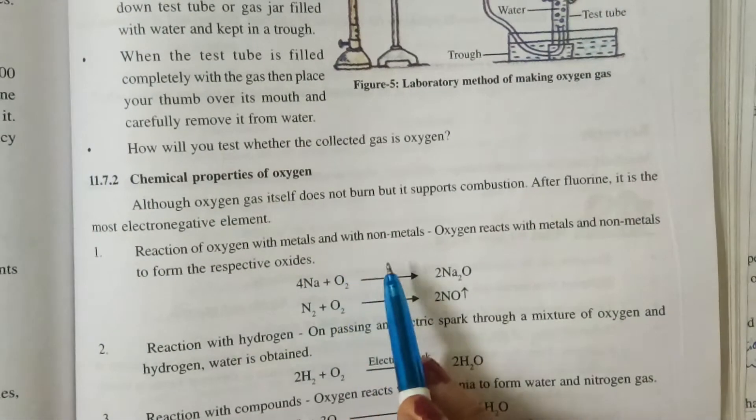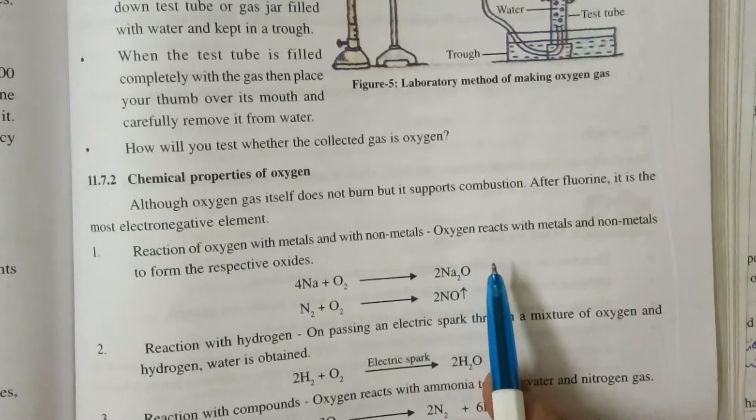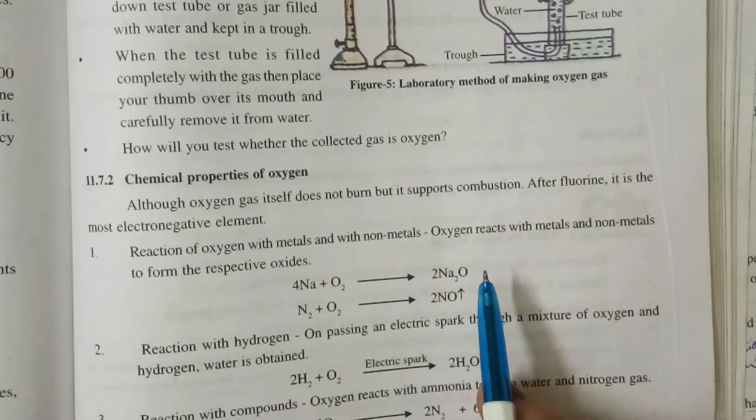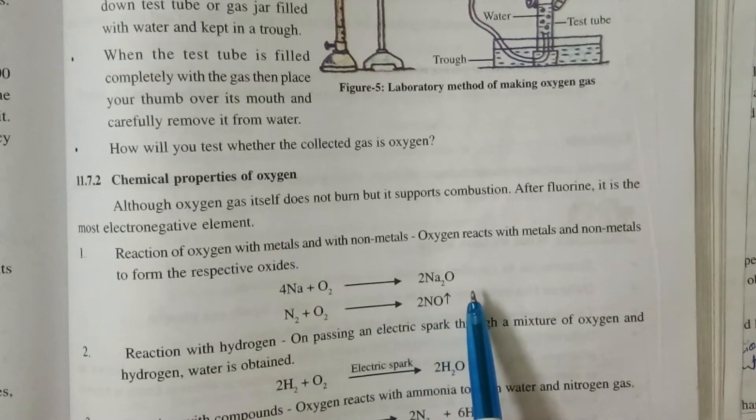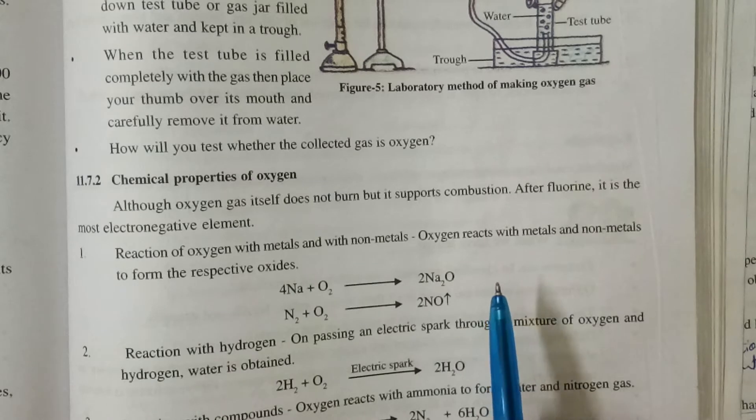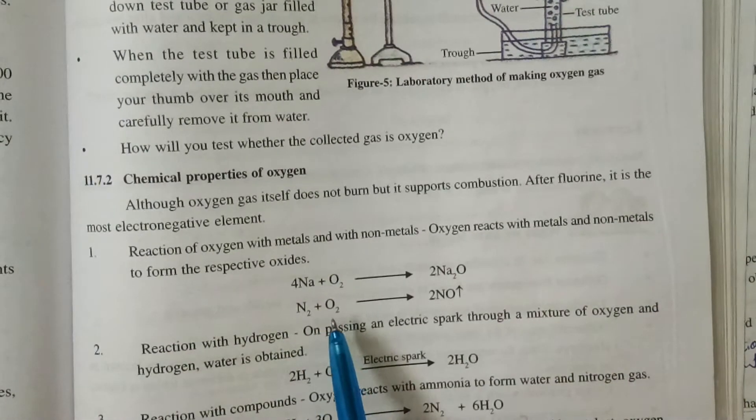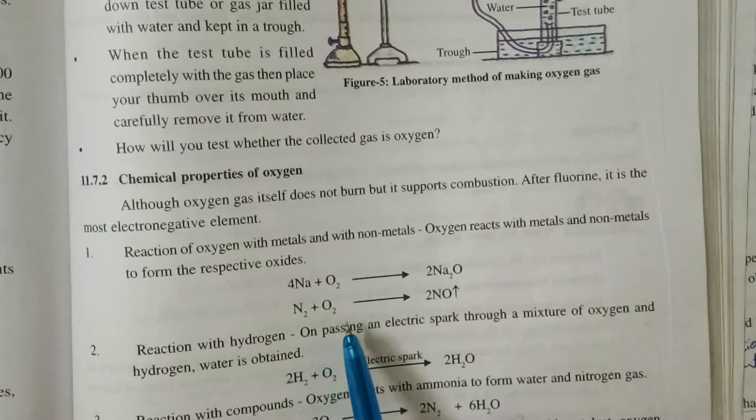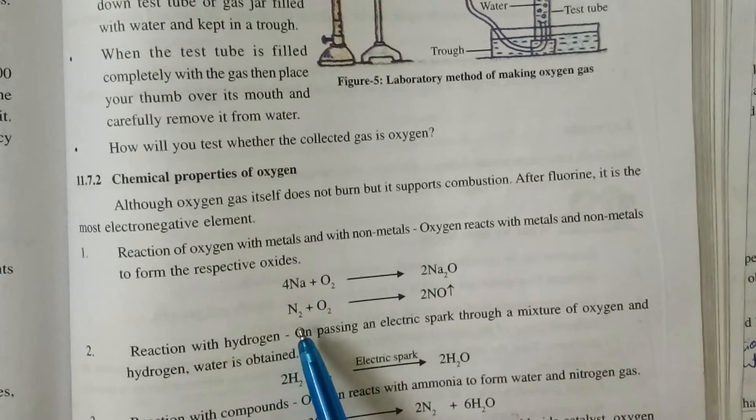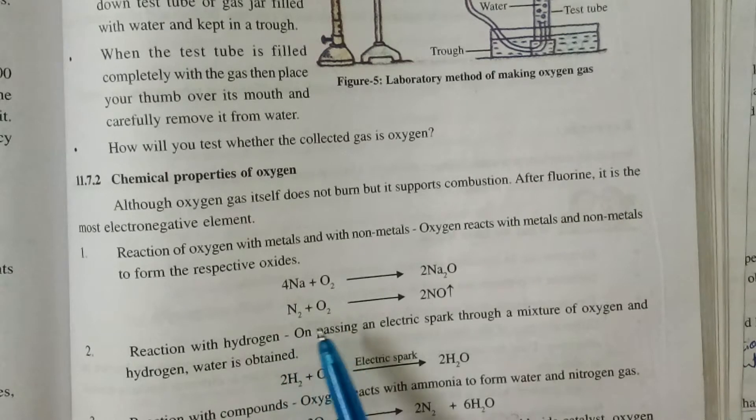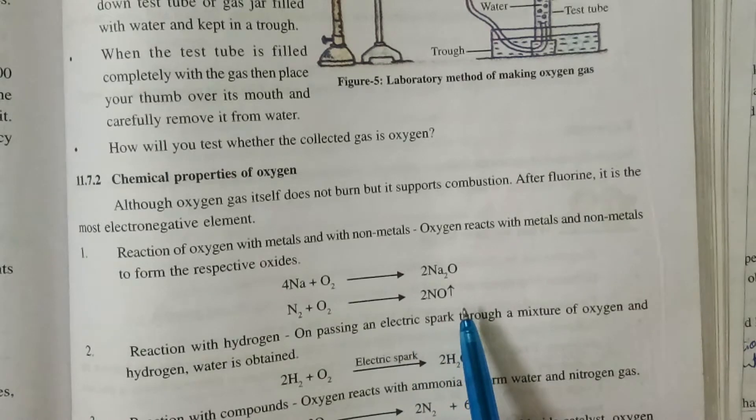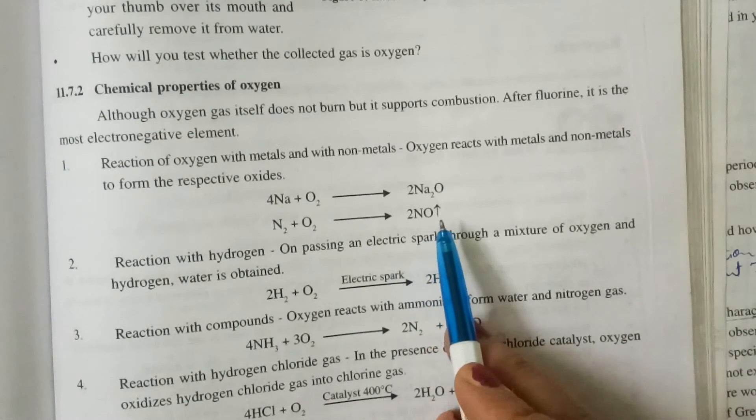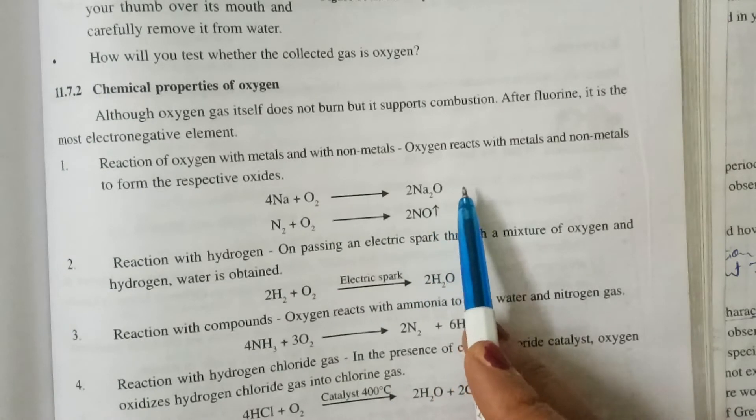Oxygen gas. Reaction of oxygen with metals and non-metals. So when oxygen reacts with metals and non-metals, it forms their respective oxides. Suppose sodium metal is taken and when it is reacted with oxygen, Na2O is formed. And when nitrogen gas and non-metals, nitrogen is also a non-metal and oxygen is also a non-metal. When N2 is reacted with O2, NO is formed. So reaction with this NO is nitrogen oxide and this Na2O is sodium oxide.